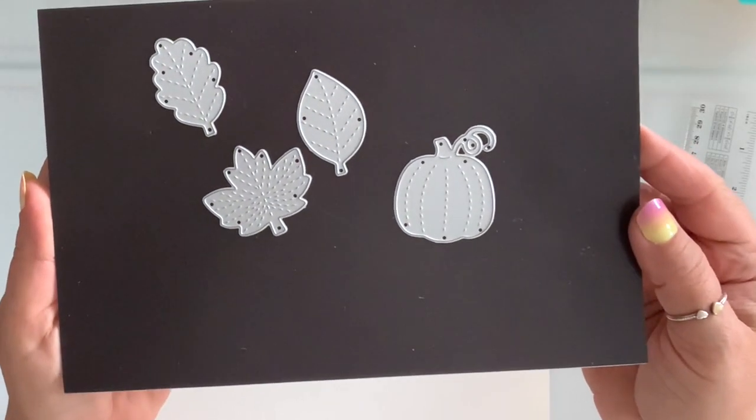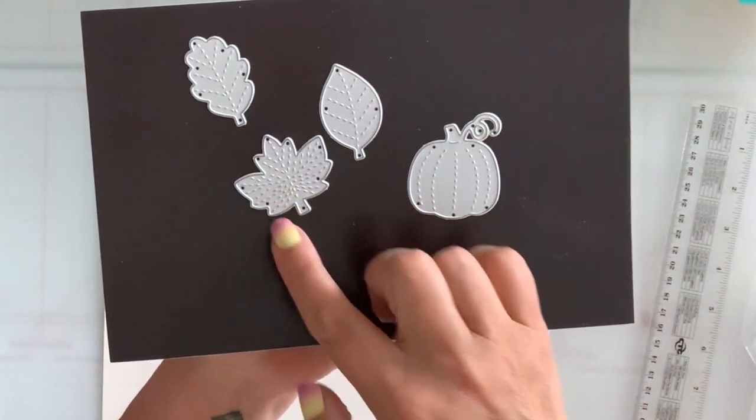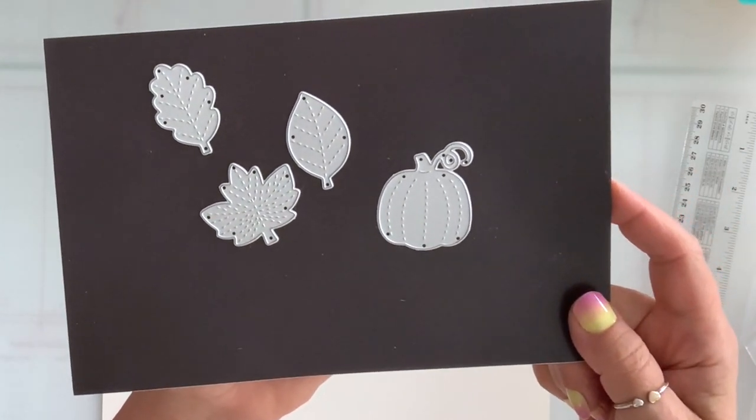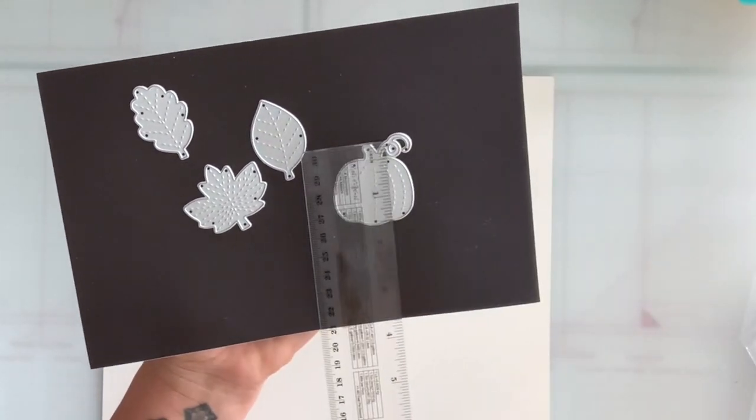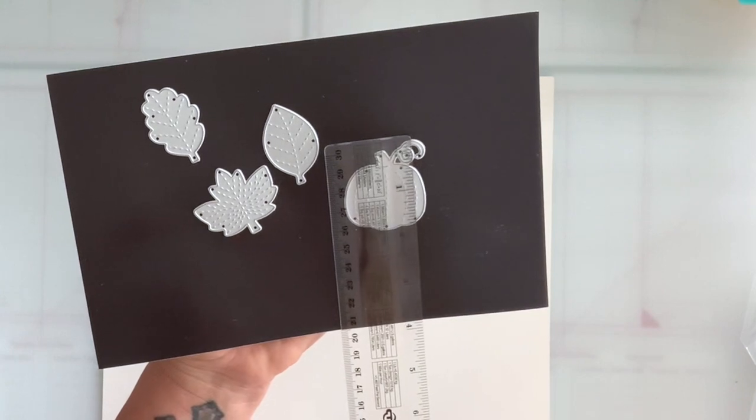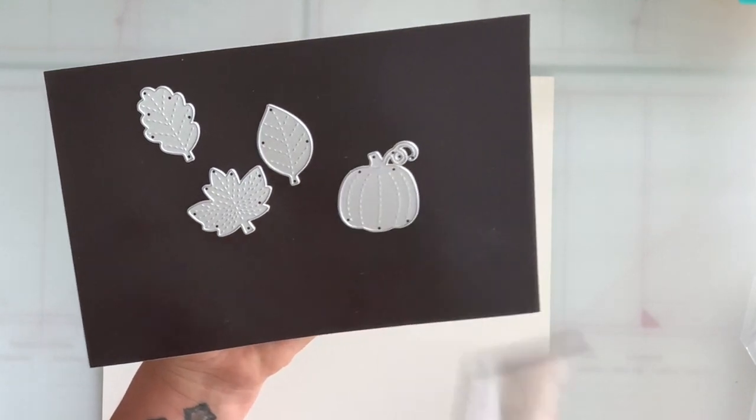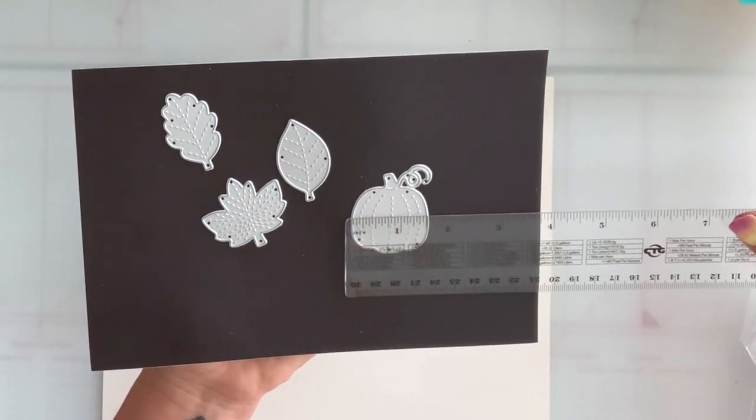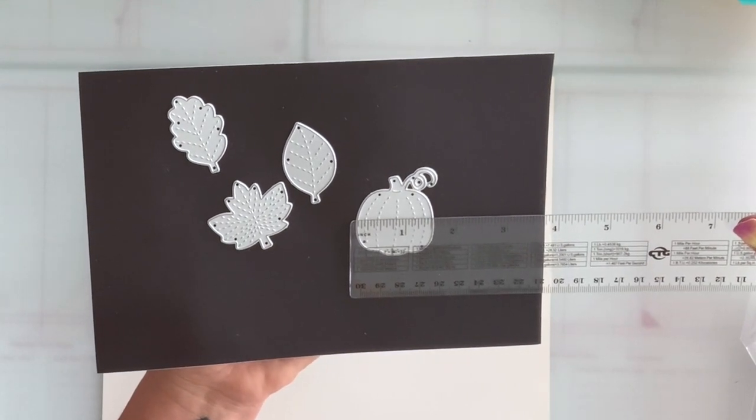Next, I have this cute pumpkin die and it comes with three fall leaves. And the pumpkin is one and three quarters by one and three quarters.